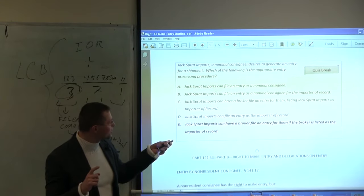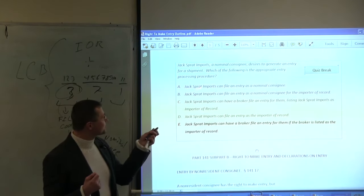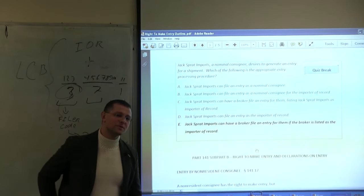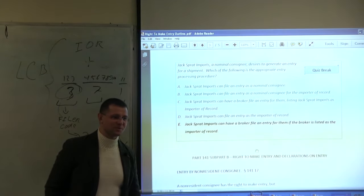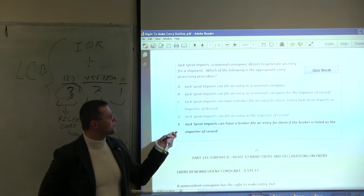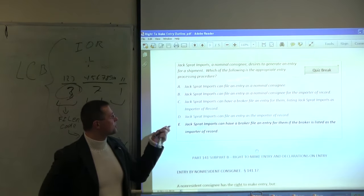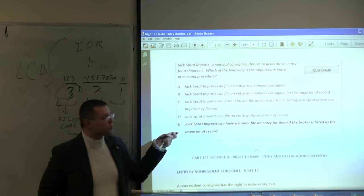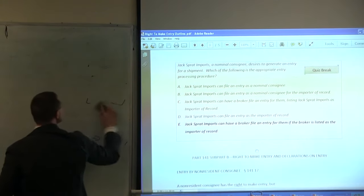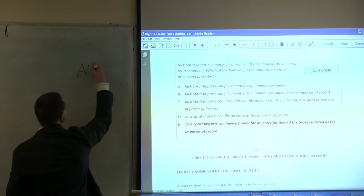But also watch out because they may change a little bit, a little wording to trick you up. So always be very careful with this. But let's take a look. Jack Sprat imports can file an entry as a nominal consignee. Well, here is a good example of the best answer rule. Best answer rule means that you have to really look at the facts. Given the facts, it is possible that they can file entry as a nominal consignee, but they also have to be authorized licensed customs broker. Based on this information, you do not have that information. So it is possible. So I would kind of check A, but I would not really bank on it because there may be a better answer. Because it is not as complete. So A, I would say, is a check minus.